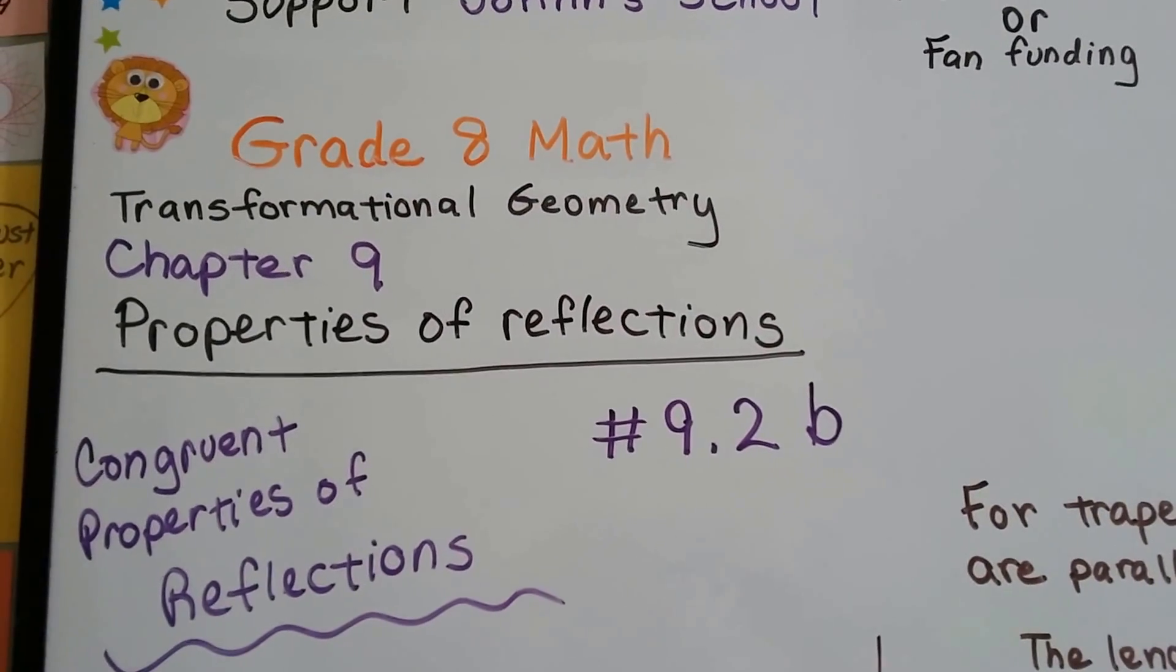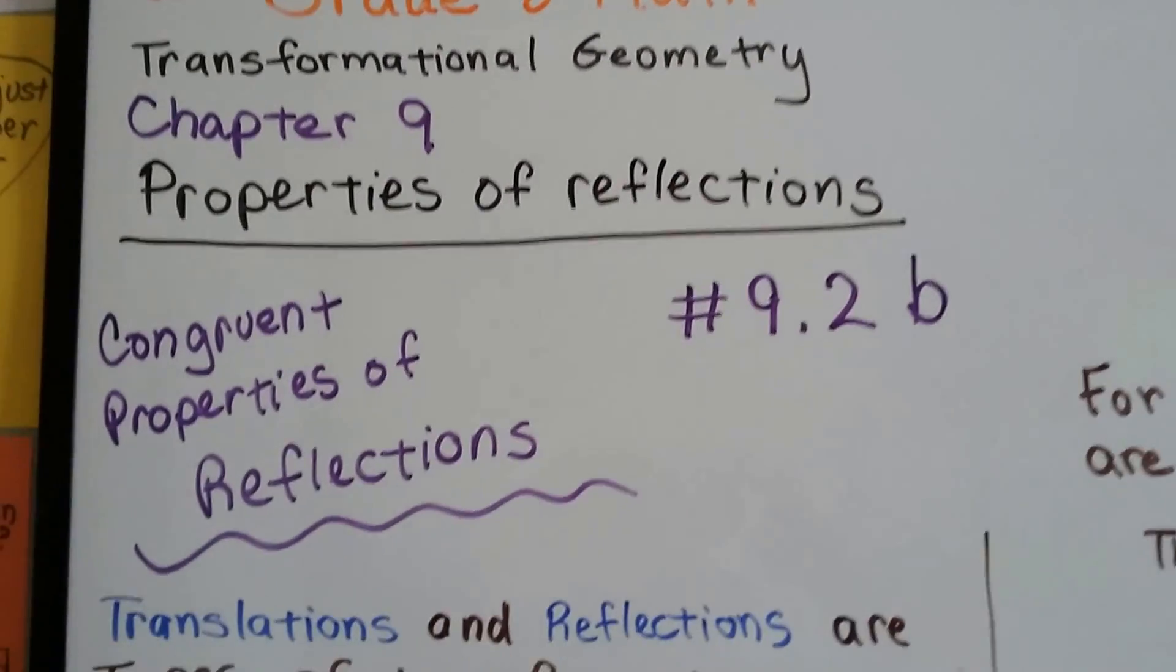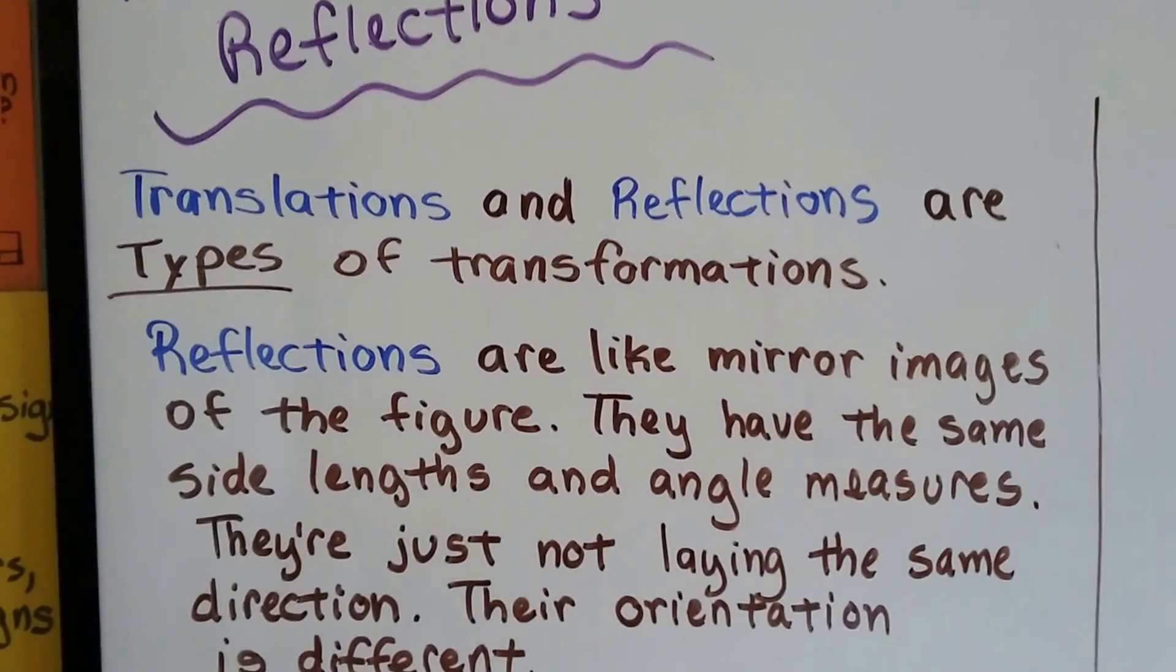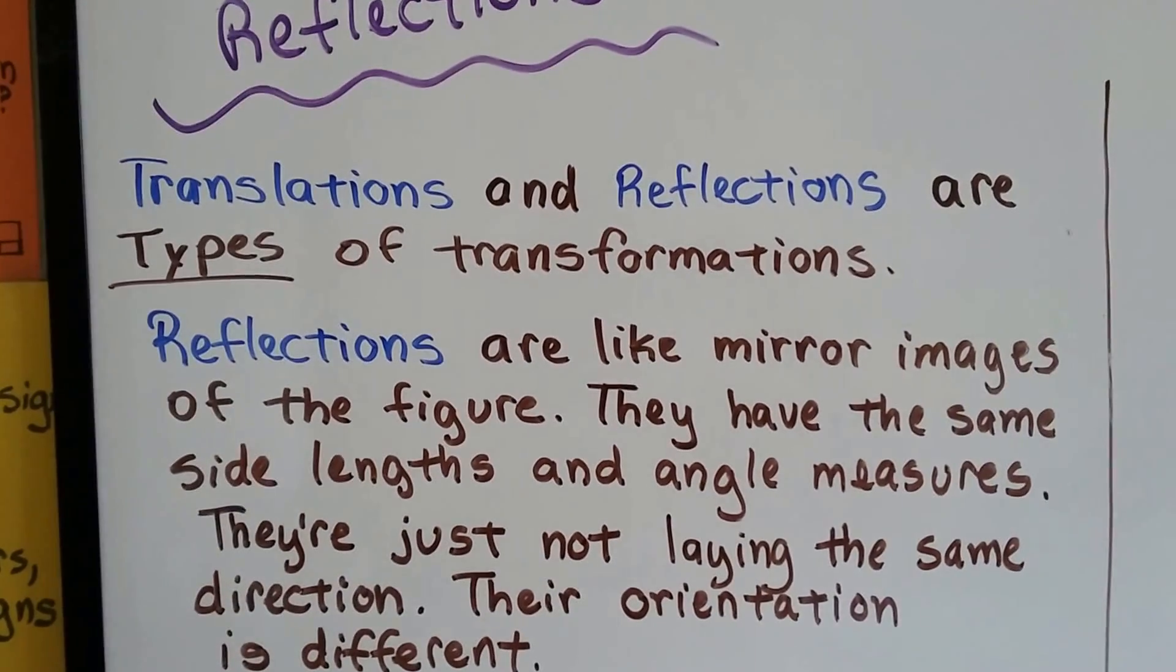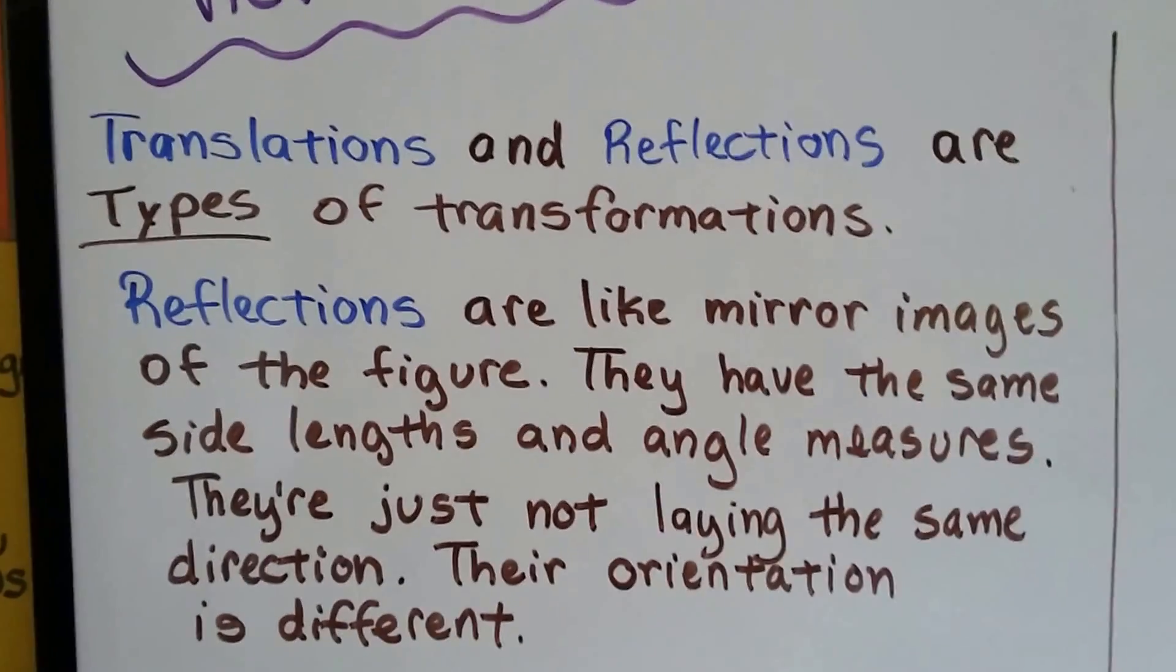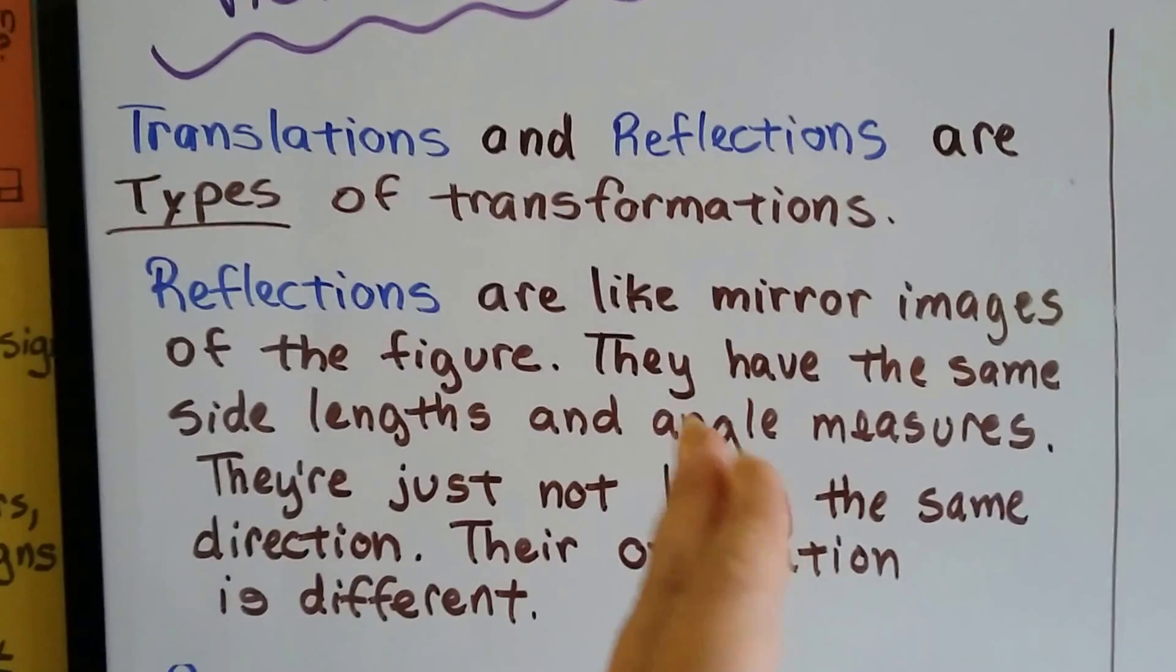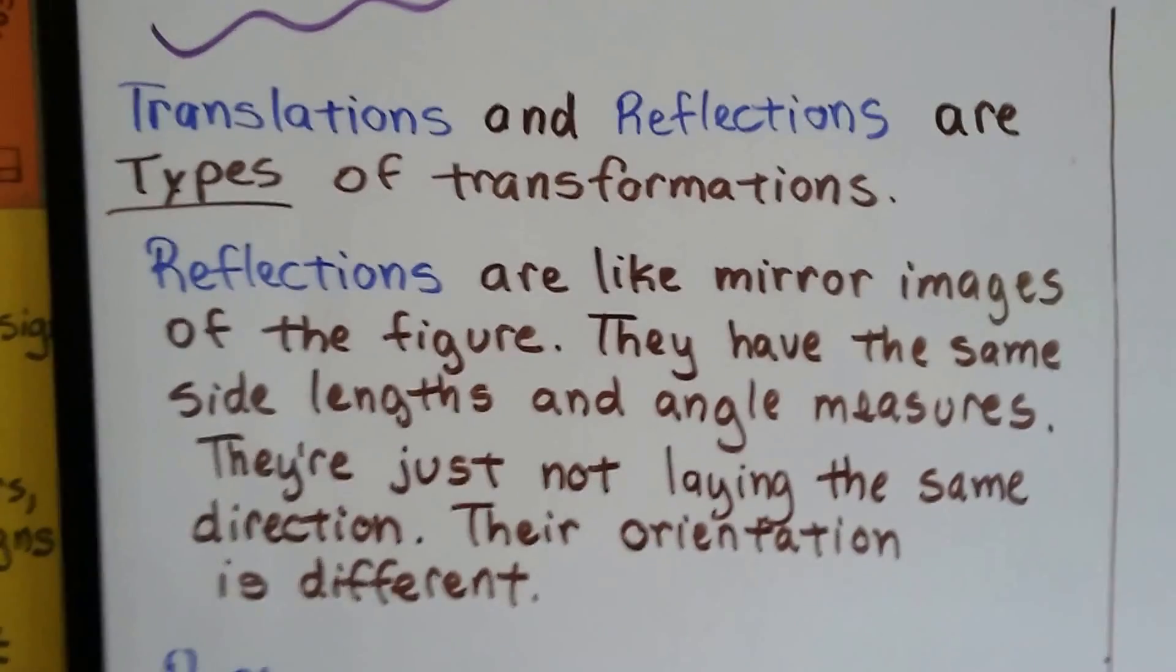Grade 8 math number 9.2b, Congruent Properties of Reflections. Translations and reflections are types of transformations. Transformations would be the big title, and translations and reflections would be subtitles underneath them. They're parts of the transformations.